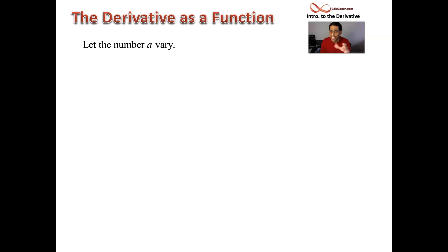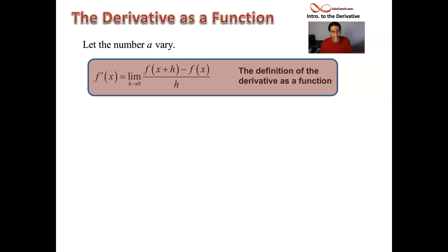That number a should be able to vary and be anything you want in that second calculation technique where we had f prime of a being equal to the limit as h goes to zero of f(a+h) minus f(a) all over h. Now rip out the a and put in an x. x is your input and your output is the slope of the tangent line. This is the definition of the derivative as a function of x.